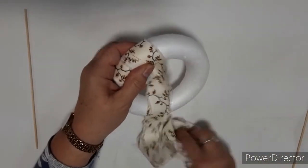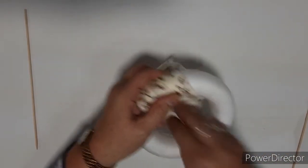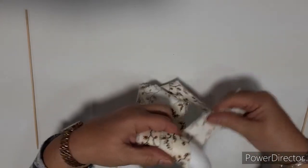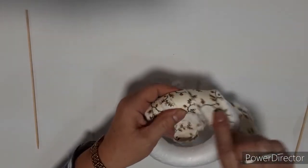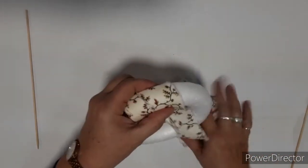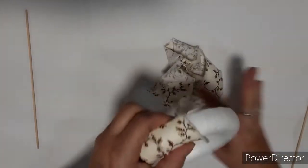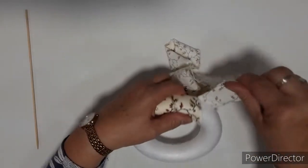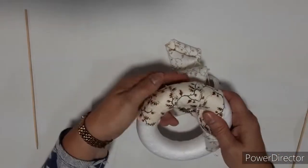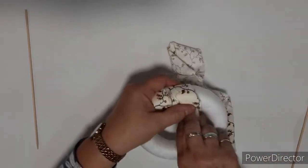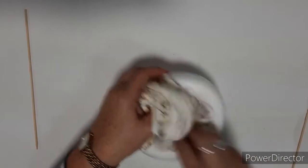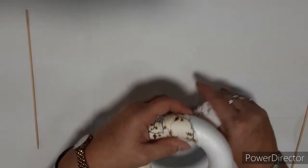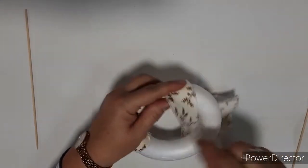Just keep making sure we keep turning it over, getting the right side of the fabric. Go around, passing it through each time, straighten it out, overlapping, smooth it down and pass it through, keep tucking it through, work your way around the ring.